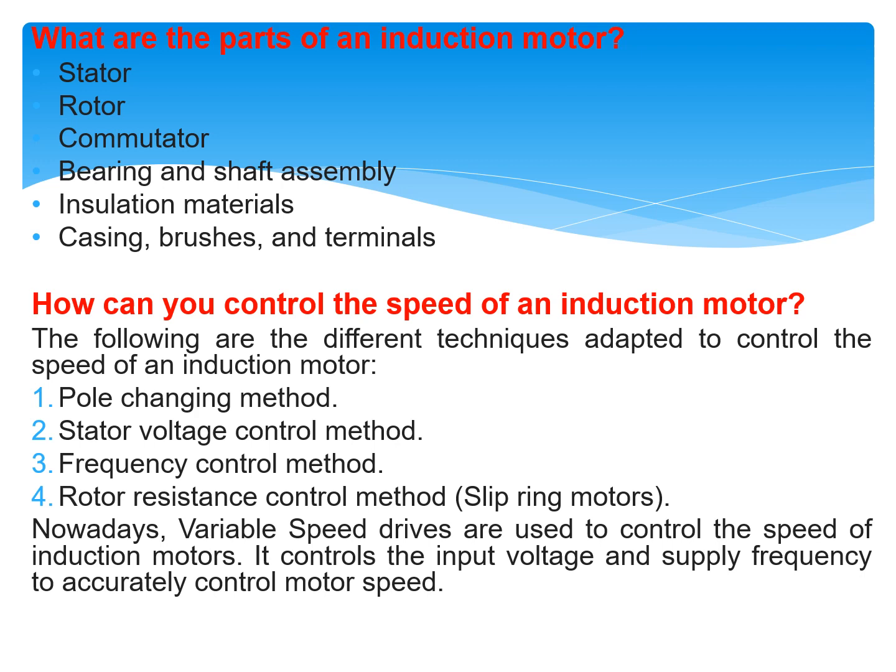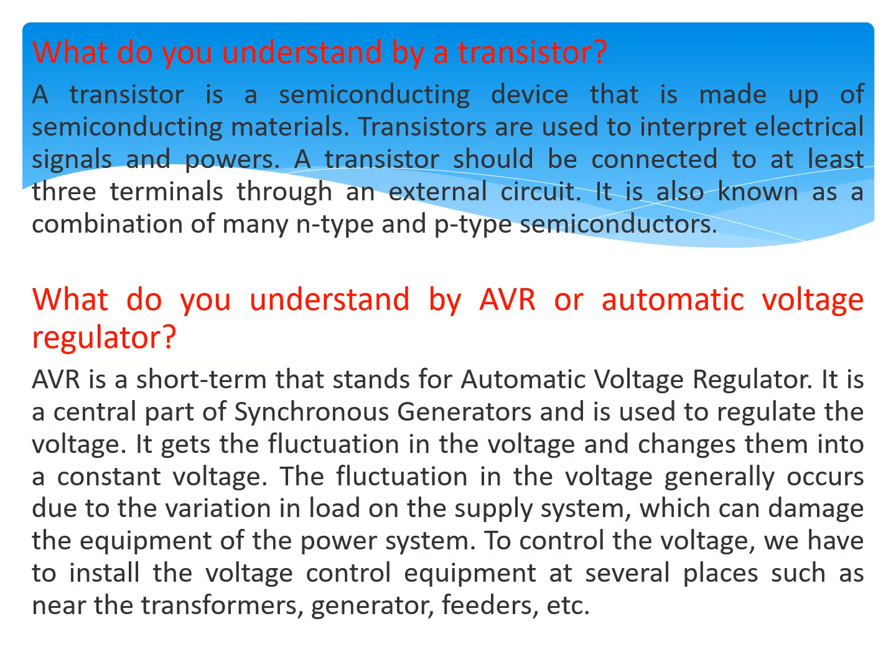What do you understand by a transistor? A transistor is a semiconducting device made up of semiconducting materials. Transistors are used to interpret electrical signals and power circuits. A transistor should be connected to at least three terminals through an external circuit. It is also known as a combination of N-type and P-type semiconductors.